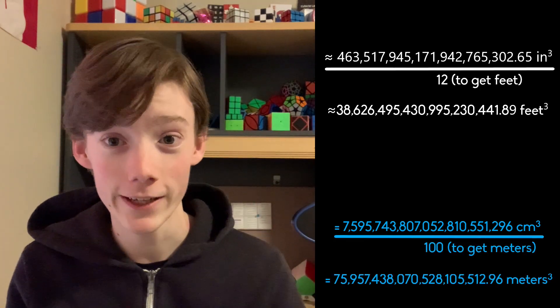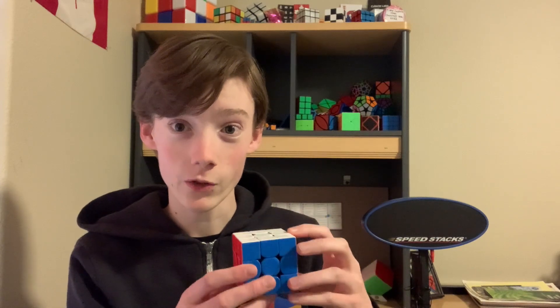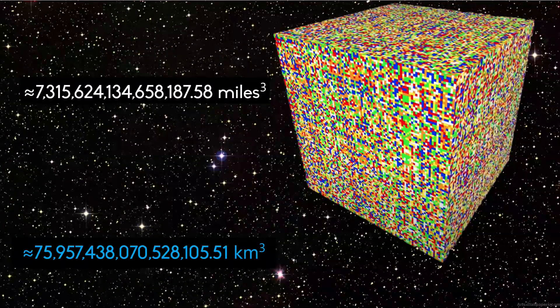Anyways, we take that, we divide by 12 to get feet, and that's just 38 quintillion cubic feet. We divide that by 5,280, which is how many feet there are in one mile. And a giant cube in space with every single 43 quintillion scrambles takes up seven quadrillion cubic miles of volume.